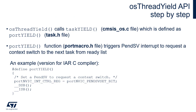Let's have a closer look at the osThreadYield API function step by step. The osThreadYield function comes from CMSIS OS v2 and calls the taskYield function from the FreeRTOS API. taskYield calls portYield, which is defined in portmacro.h, and this function triggers the PendSV interrupt to request a context switch to the next task from the ready list.